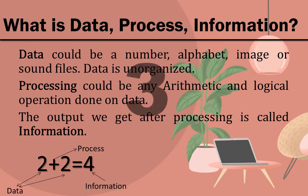Let's see what is data, process, and information. Data could be a number, alphabet, image, or sound files. Data is unorganized. Processing could be any arithmetic and logical operation done on data. The output we get after processing is called information.